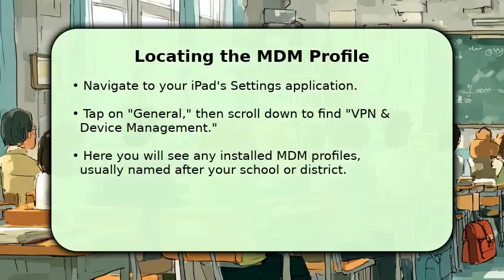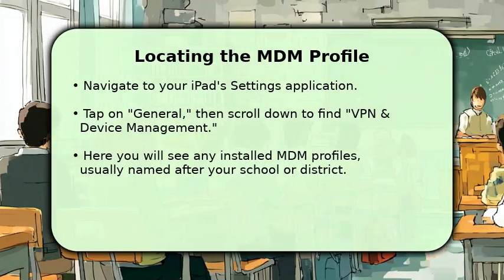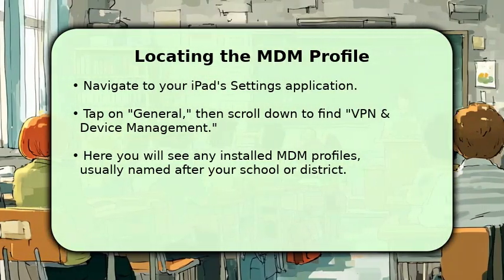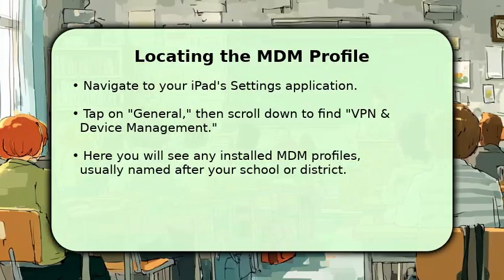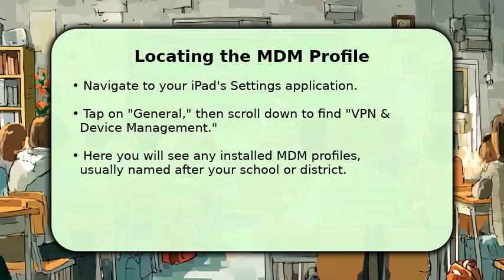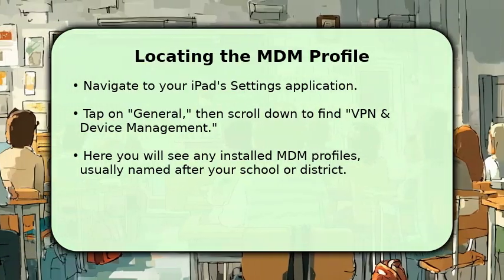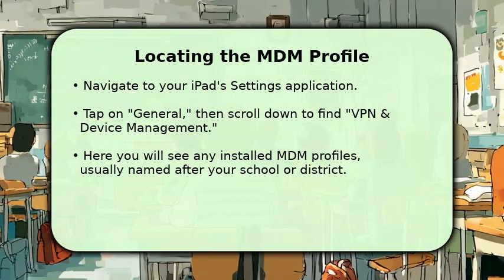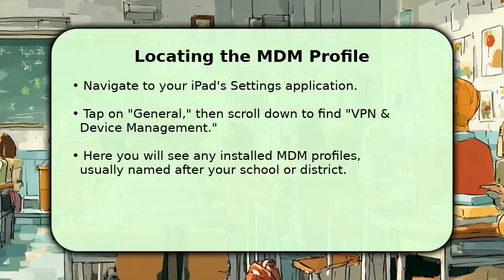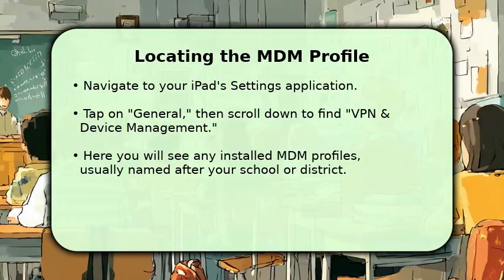To find the installed MDM profile on your iPad, begin by opening the Settings application on your home screen. From there, select General, and then scroll down to locate VPN and Device Management. Within this section, you will see a profile that represents your school's management system. Tapping on it will show you more details about the restrictions in place and who administers them.